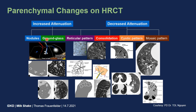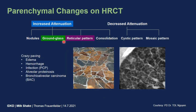In our case we have a combination of the ground glass and reticular pattern. This leads to the so-called crazy paving, which appears in edema, hemorrhage, infectious, alveolar proteinosis, and bronchoalveolar carcinoma.